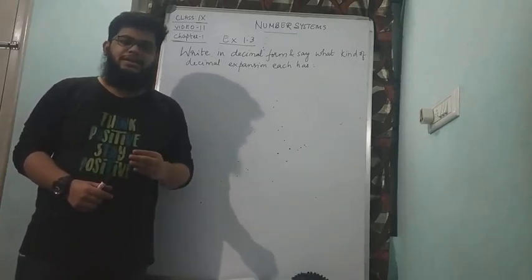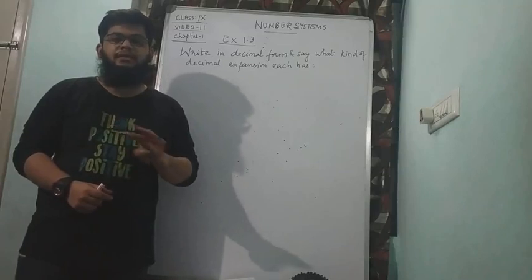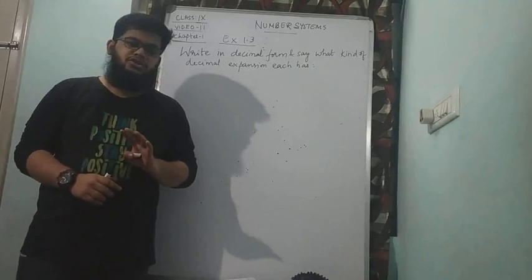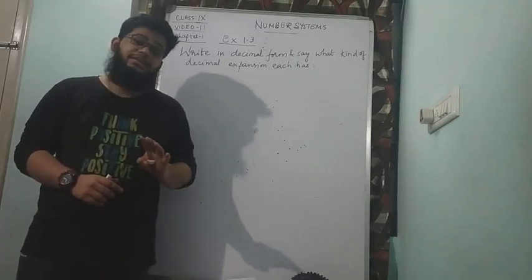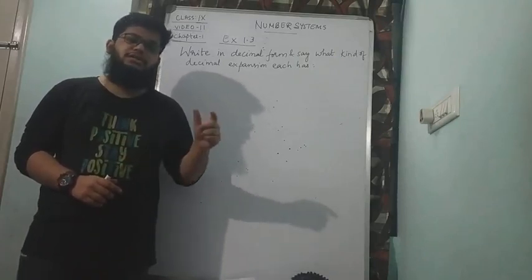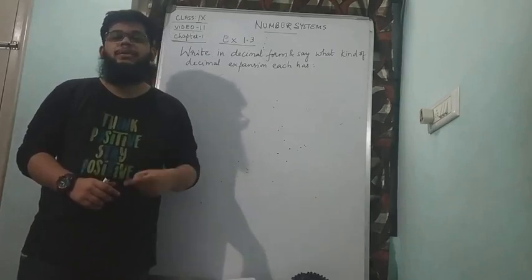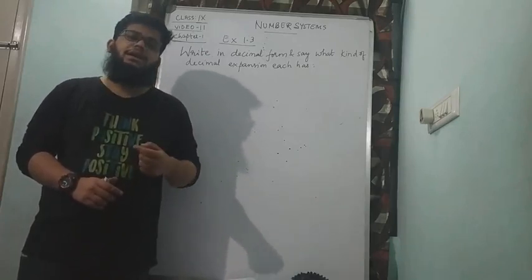So terminating is where the remainder becomes 0 and the division stops. Non-terminating is where the division does not stop because it is non-terminating, and recurring means if the values in the quotient part repeat themselves again and again.